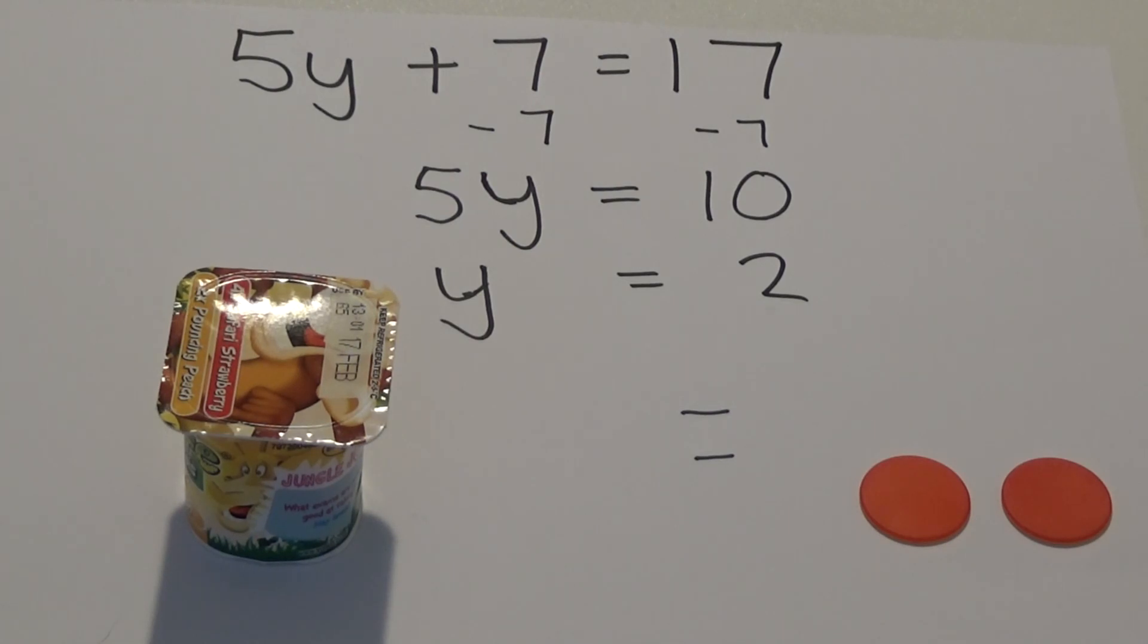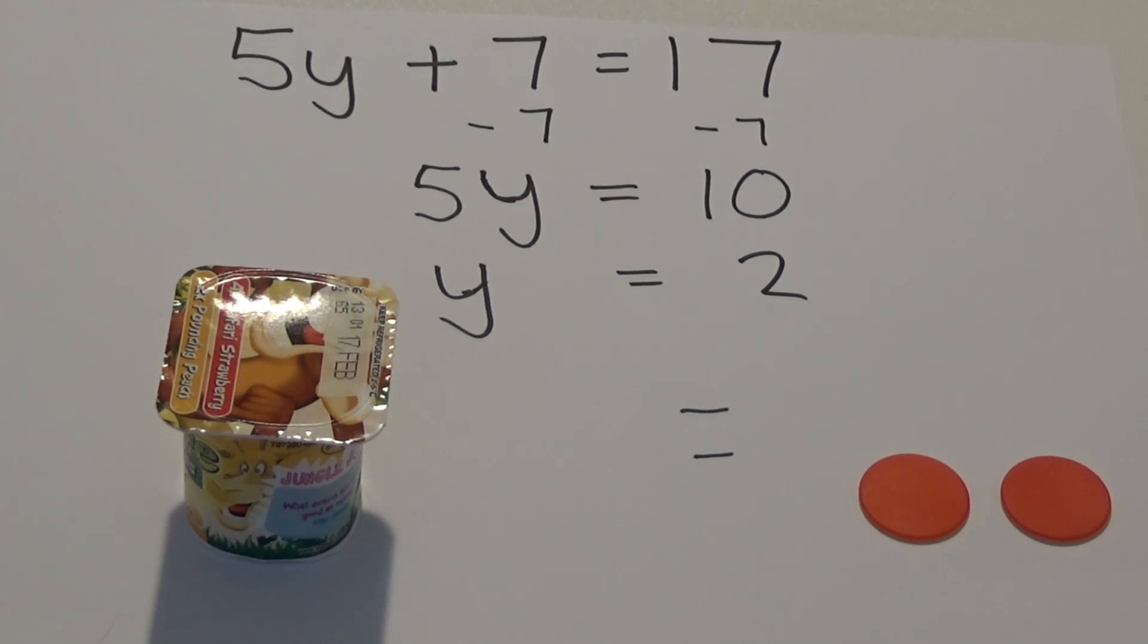So in the equation, 5Y plus 7 equals 17, Y is equal to 2. We can check this by putting 2 into the equation. 5 times 2 is 10, plus the 7 equals 17.